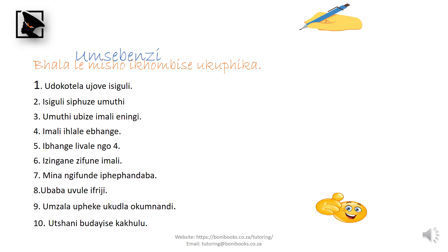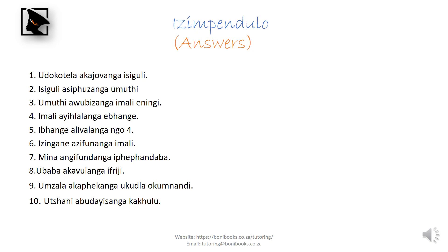We've looked at all the noun groups. You can go through all of them, look at the noun groups, and see what each takes as a negative. Now for your exercise: write all the sentences in the negative — nau kumsebenzi. Look for the verb in each sentence and change it into the negative. Do it on your own without your notes first to check how much you understood. Then check the next slide for the answers.